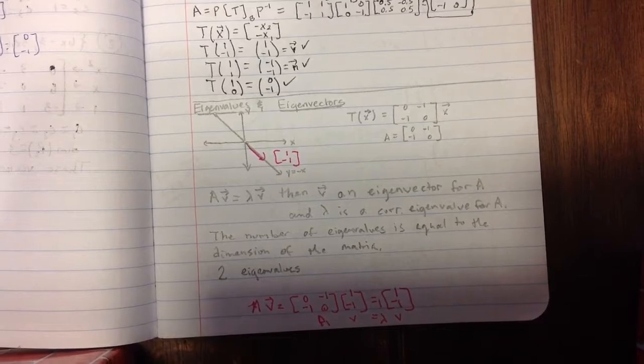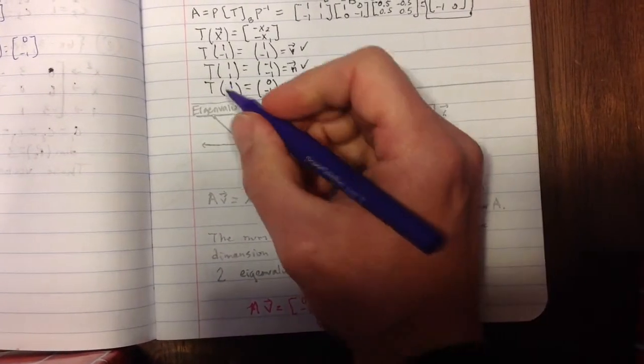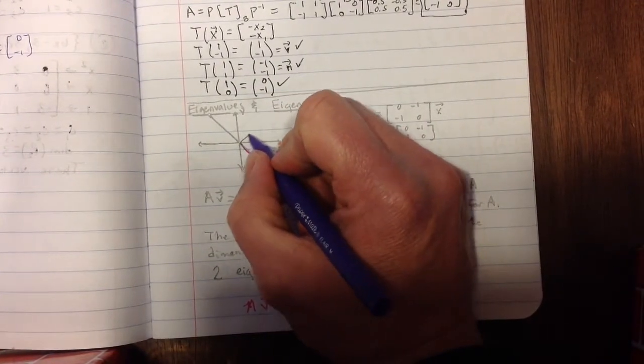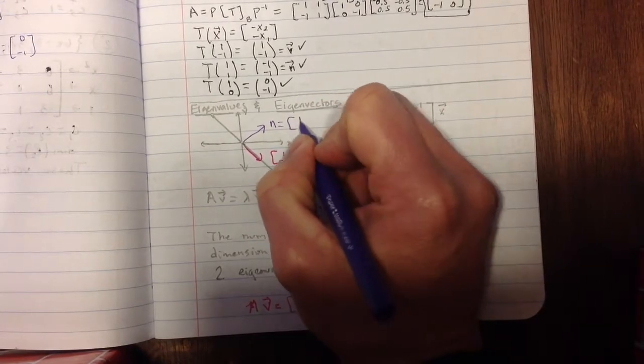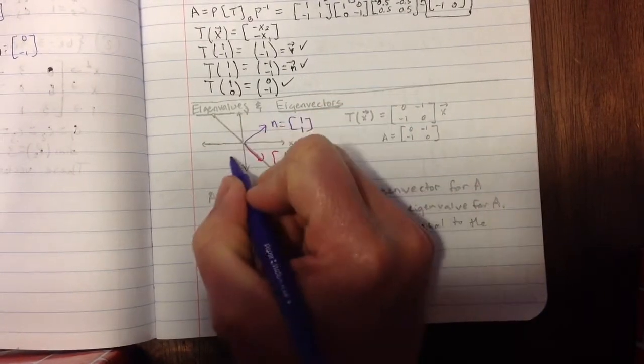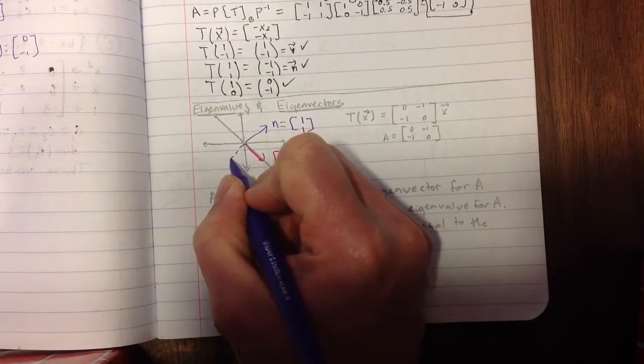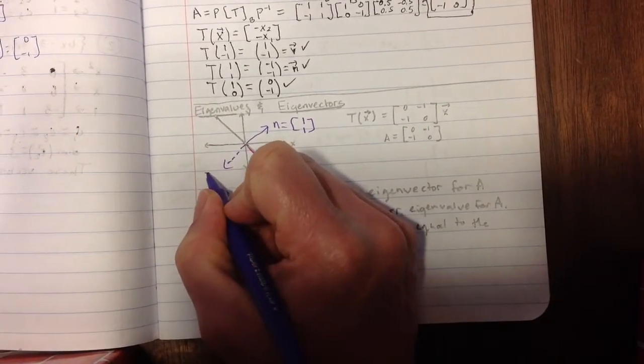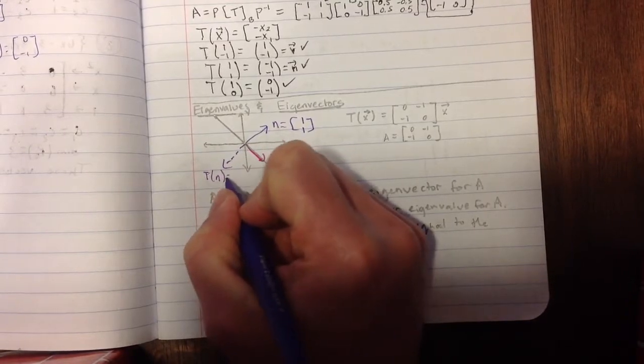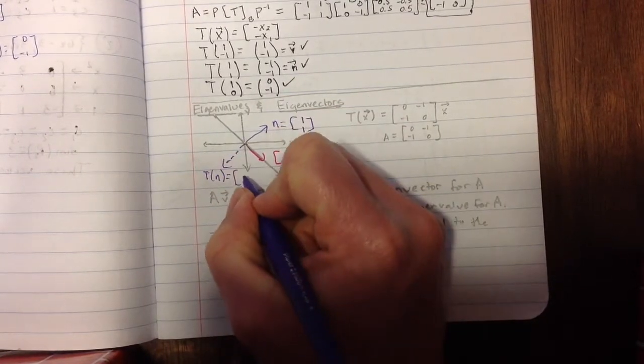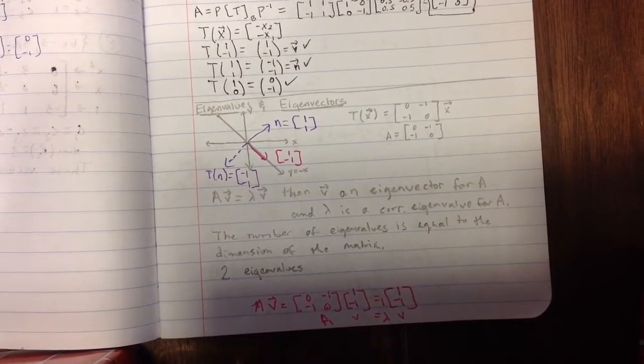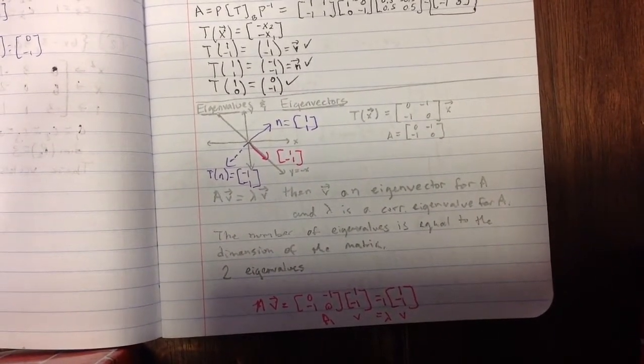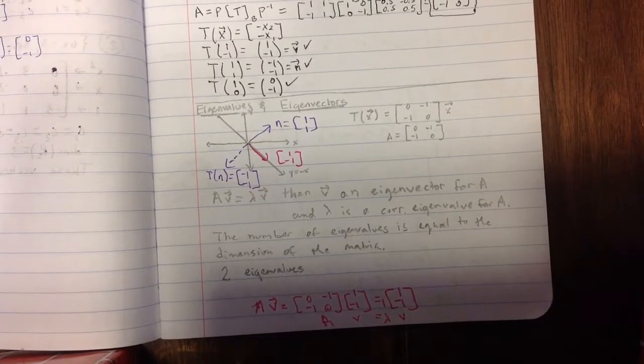And if I look at this normal vector, which was [1, 1], we should see the transformation is just going to be the opposite. So T of n should equal [-1, -1]. So you can almost guess what the eigenvalue will be that corresponds to that. Can you guess? Well, you're right. It's going to be negative 1.